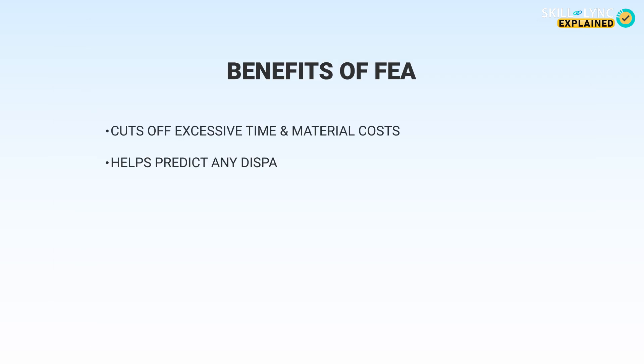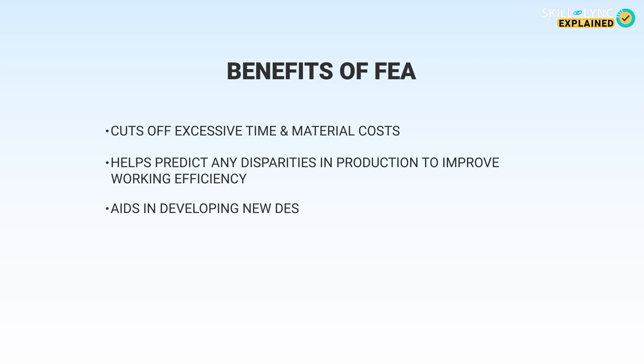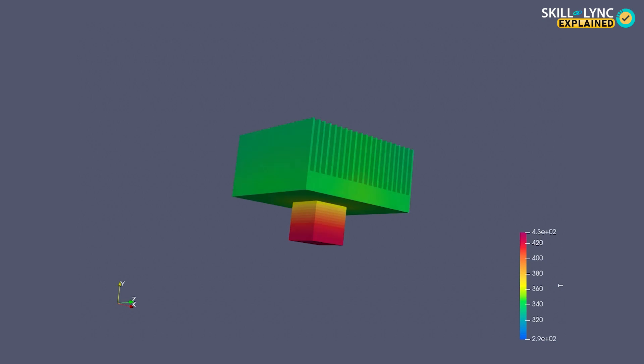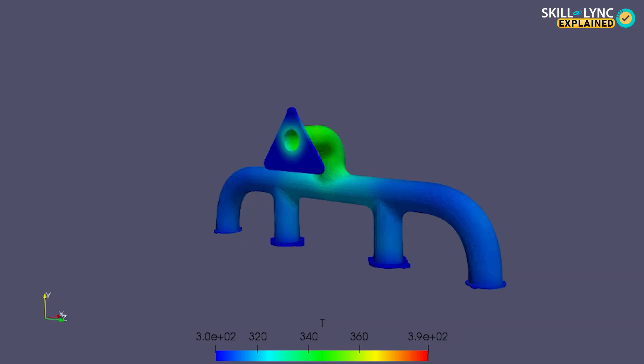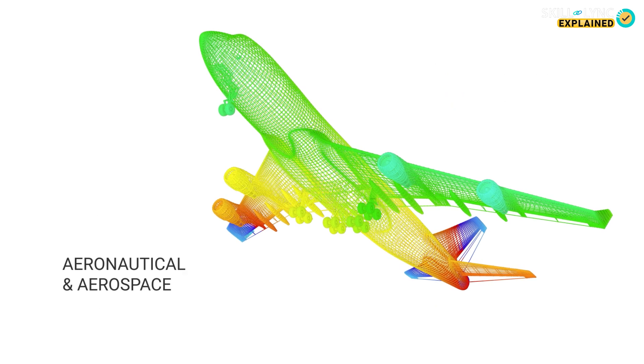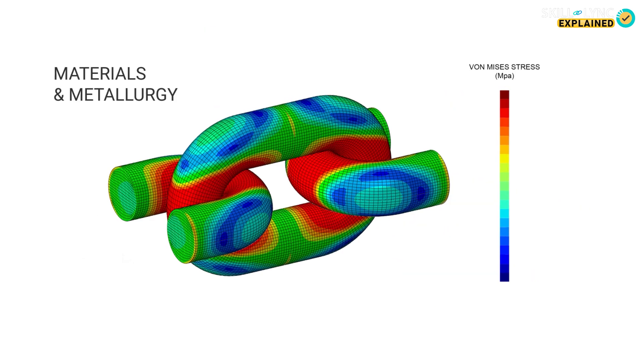FEA also predicts any disparities in production to improve working efficiency. It also aids in developing new designs for products or modifying existing products to suit new requirements. FEA decodes physical behavior and helps identify the optimized design. It forms a ground for development in almost all engineering disciplines like production and manufacturing, aerospace and aeronautical engineering, materials and metallurgy, and electronics. FEA helps in identifying the root cause of a problem and coming up with solutions quickly and effectively. It enables engineers to visualize complicated problems and come up with better solutions and products every day.